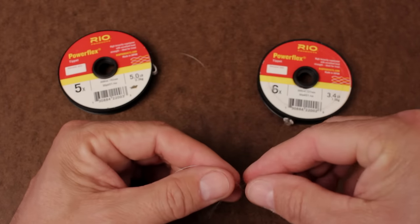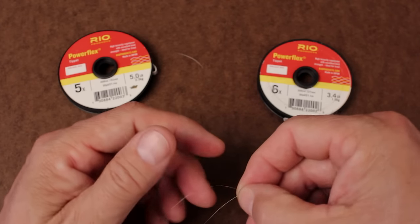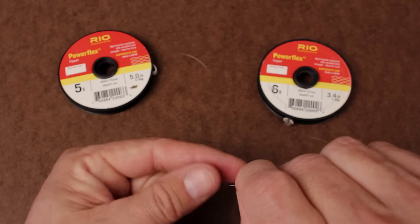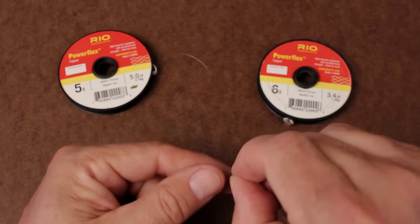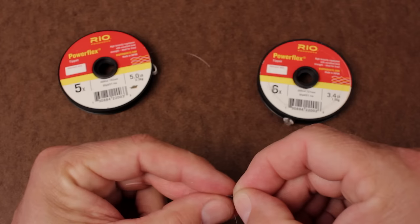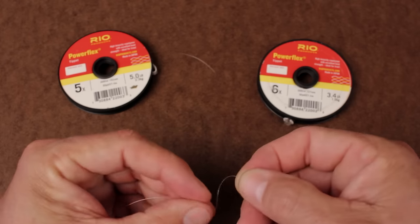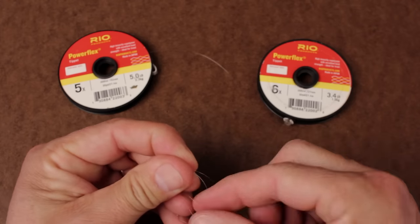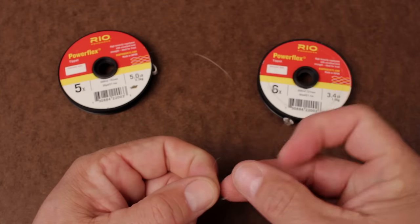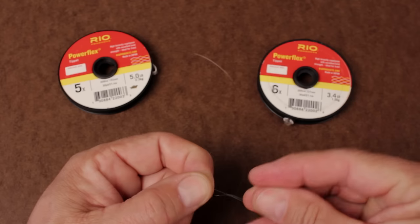Here I'm going to show how to tie a blood knot using more realistically sized materials. Just imagine you're attaching a length of 6x tippet material to the end of a leader that tapers down to 5x. The knot tying procedure is exactly the same as before, but managing the lighter weight, harder to see materials is definitely more challenging.